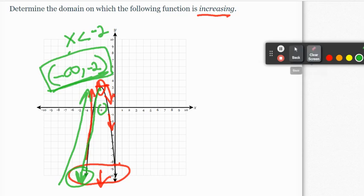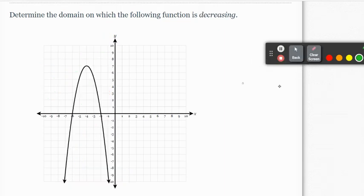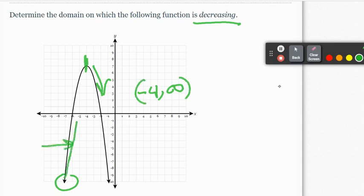And then one more very similar graph, but decreasing. This graph starts decreasing. It's not decreasing everywhere. I know the arrow's pointing down. It actually starts decreasing here and then it's decreasing to the right. So at negative four, and then it decreases forever to infinity. This interval right here would be increasing because it's going up.